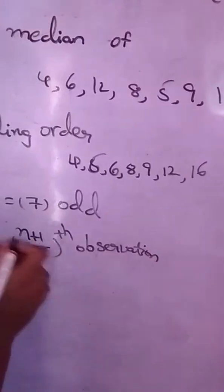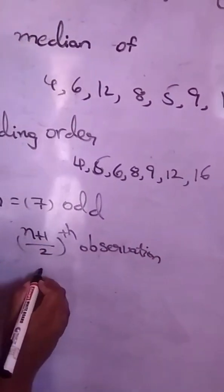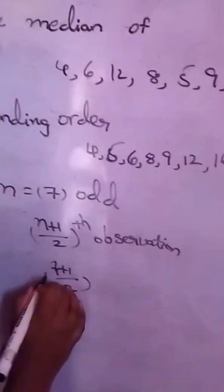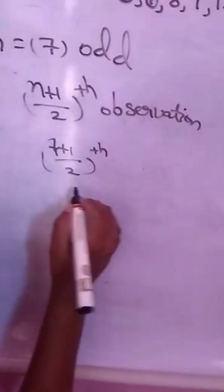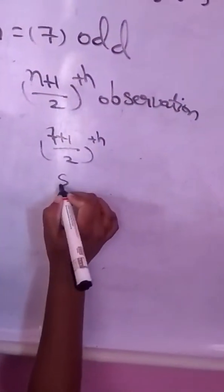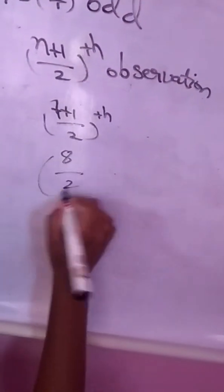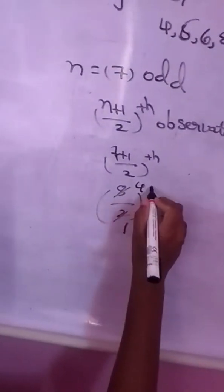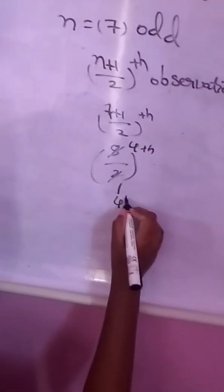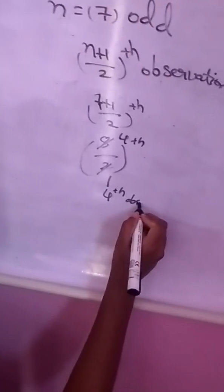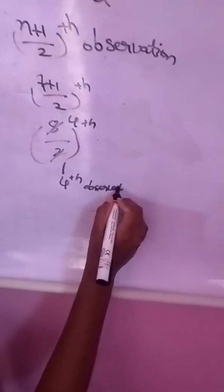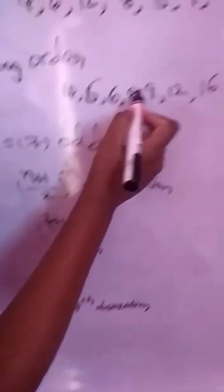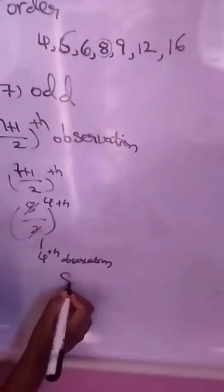N plus 1 by 2: 7 plus 1 by 2 equals 8 by 2 equals 4. So the 4th observation. Counting: 1, 2, 3, 4. The answer is 8.